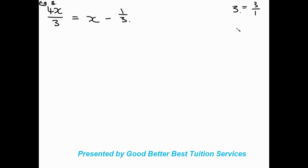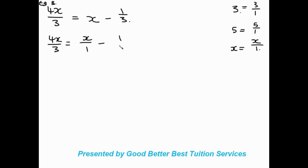Moving on to example number three: 4x over 3 equals x minus 1 over 3. We have two fractions and one term not in fraction form. To work with it, we convert x to a fraction — any whole number can be written over 1, so x becomes x over 1. The equation is now 4x over 3 equals x over 1 minus 1 over 3.